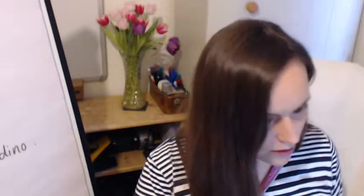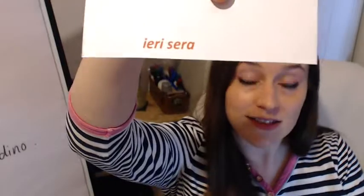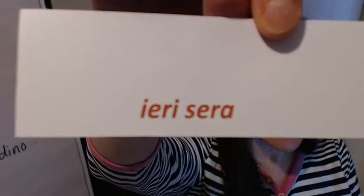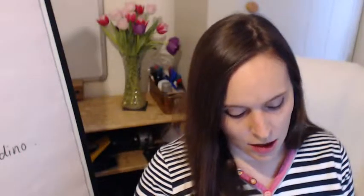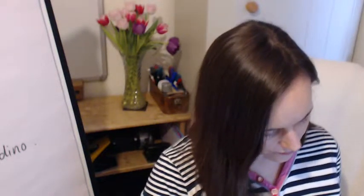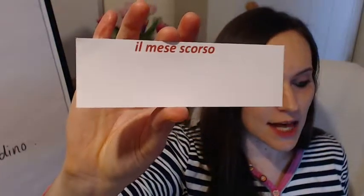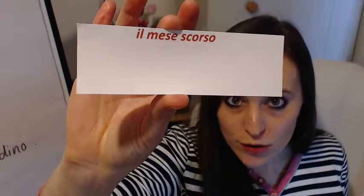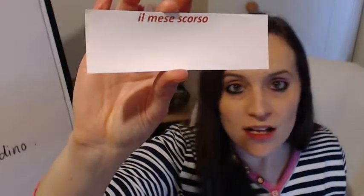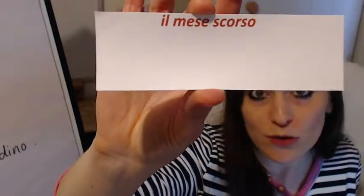Let's have a look at a few more of these, and then we'll get on to the main point of this lesson. Ieri sera — not just 'yesterday' but 'yesterday evening'. Ieri means yesterday. Here we've got a slightly different phrase: il mese scorso. Scorso means 'last' in English — as in last week, last month, last year. So il mese scorso means 'last month'.